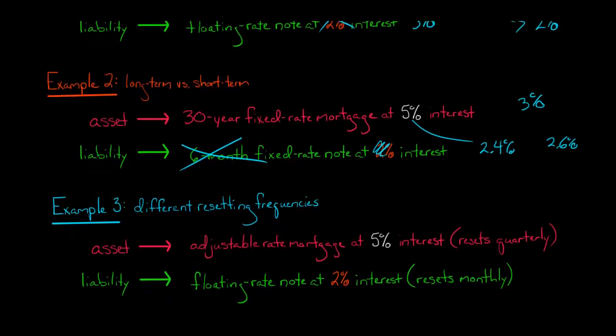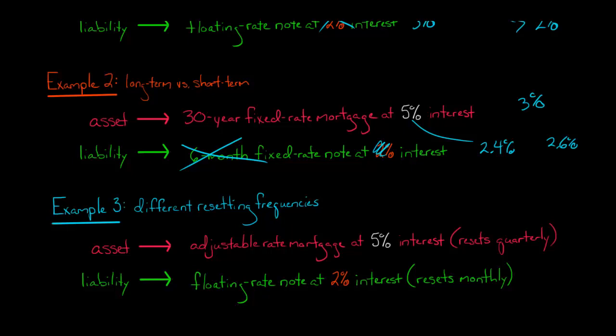They can do interest rate basis swaps — we're going to talk about all those in the videos to come. Now let's look at the last example: different resetting frequencies. Let's say you've got floating rate assets — an adjustable rate mortgage at 5% interest — and a floating rate note as the liability at 2%. So we have a 3% margin, and both the asset and liability are floating rate.